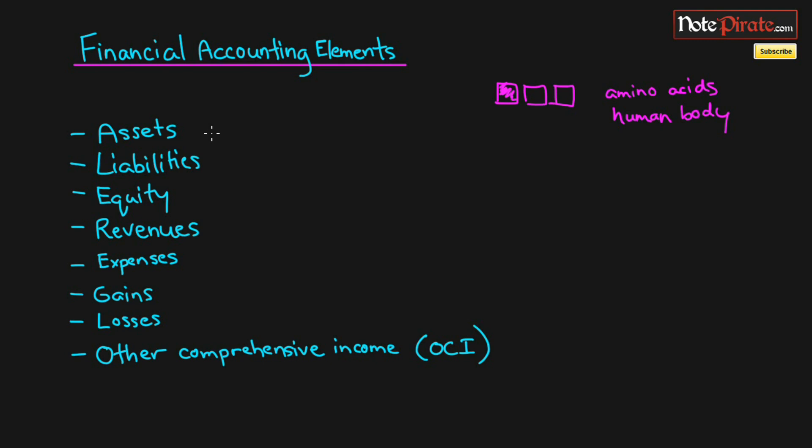Basically any transaction or account can be brought back to one of these building block or financial accounting elements. Like for example, if I were to talk about a car account, well a car account is a long-term asset because you are purchasing it and it's going to be on your books for many years. And of course, a long-term asset is just a subcategory of an asset, so it all just kind of flows back to those basic building block elements.